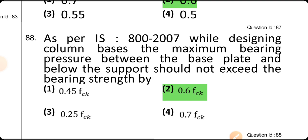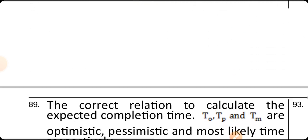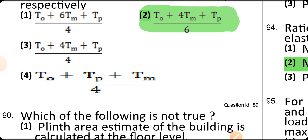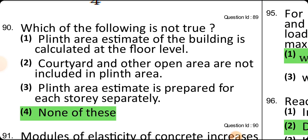As per IS 800-2007, while designing a column base, the maximum bearing pressure between the base plate and the support should not exceed the bearing strength fck. The correct relation to calculate expected completion time in PERT: T_e = (T_o + 4T_m + T_p) / 6, where T_o is optimistic time, T_p is pessimistic time, and T_m is most likely time.